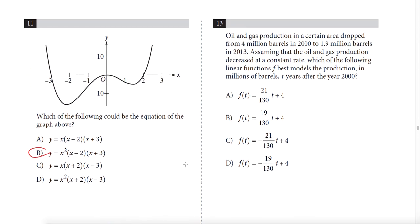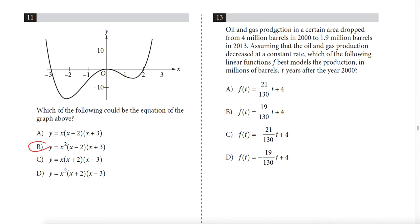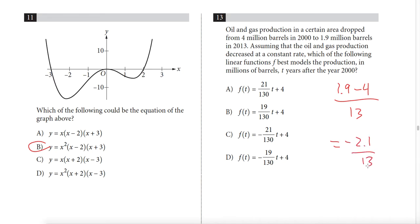Question 13: oil and gas production dropped from 4 million to 1.9 million barrels between 2013. The rate of change is (1.9 − 4)/13 = −2.1/13. Multiplying numerator and denominator by 10 gives −21/130. The only negative answer is C: −21/130.